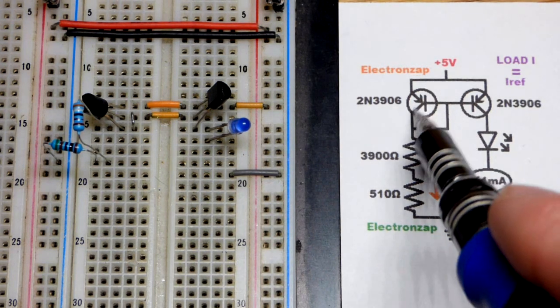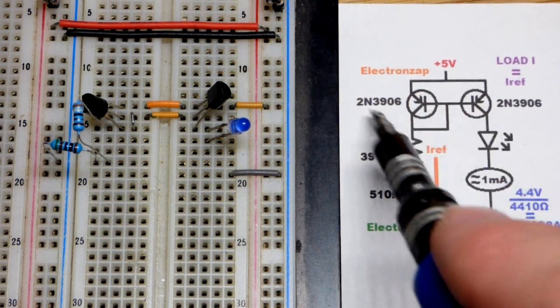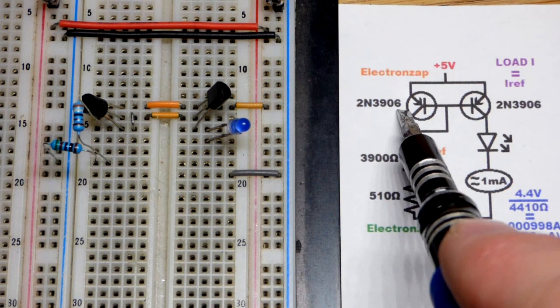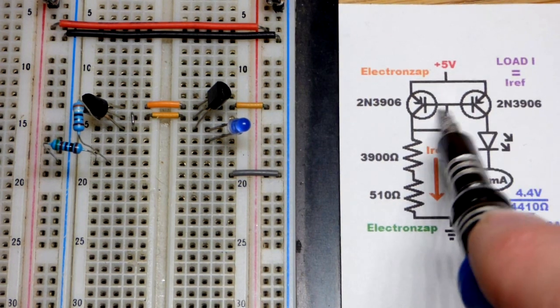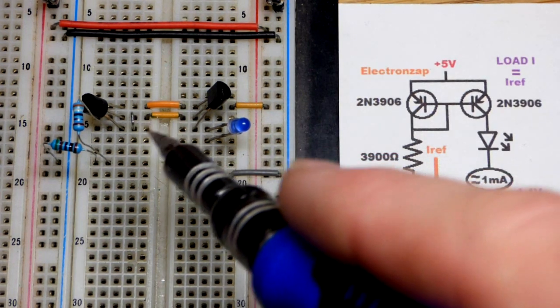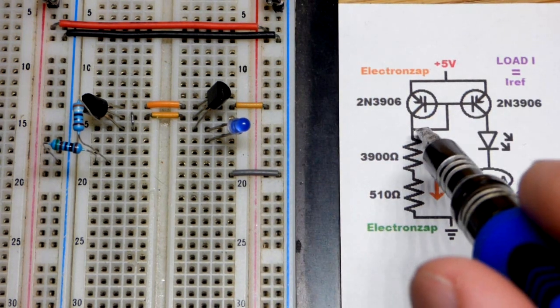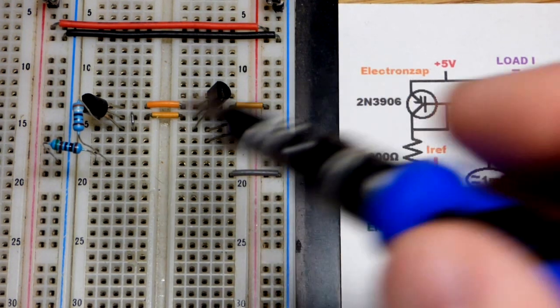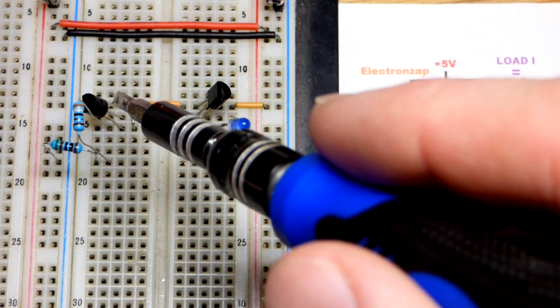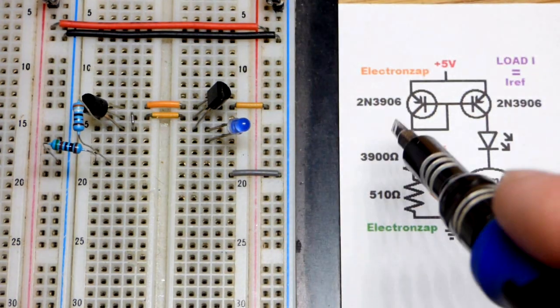Now in this video we have a couple PNP bipolar junction transistors. We're using the 2N3906. They are wired as a current mirror as you can see here. So there's a little jumper there, hopefully you can see that, that connects the base directly to the collector of the PNP bipolar junction transistor to the left right there.